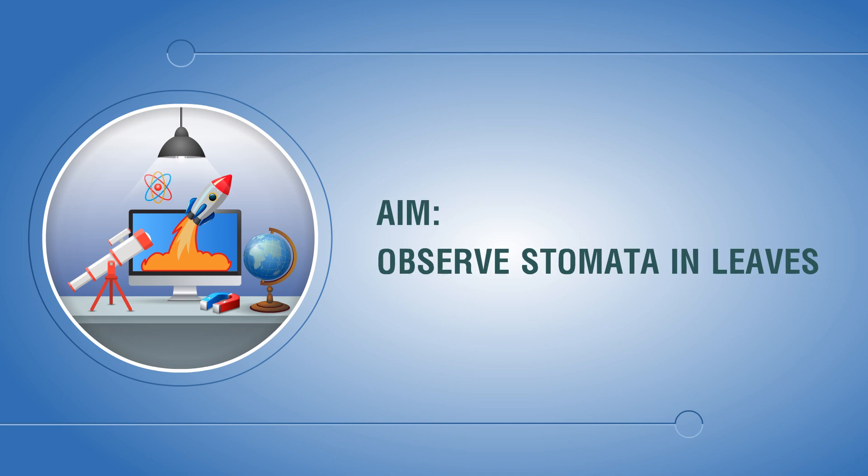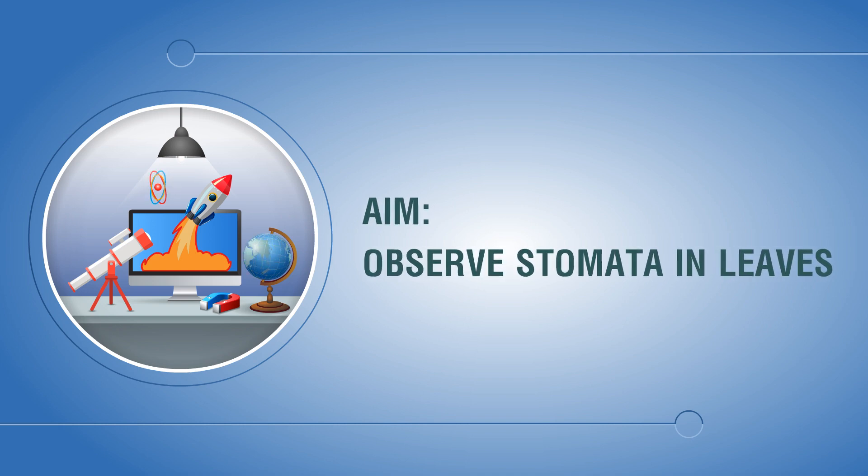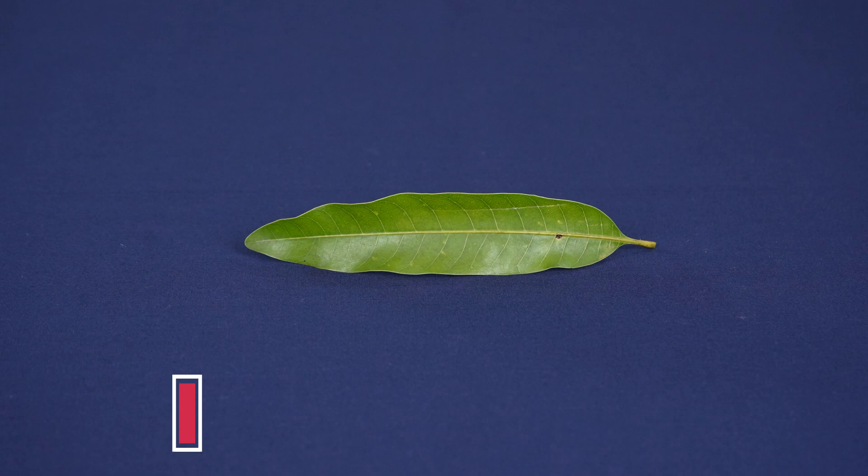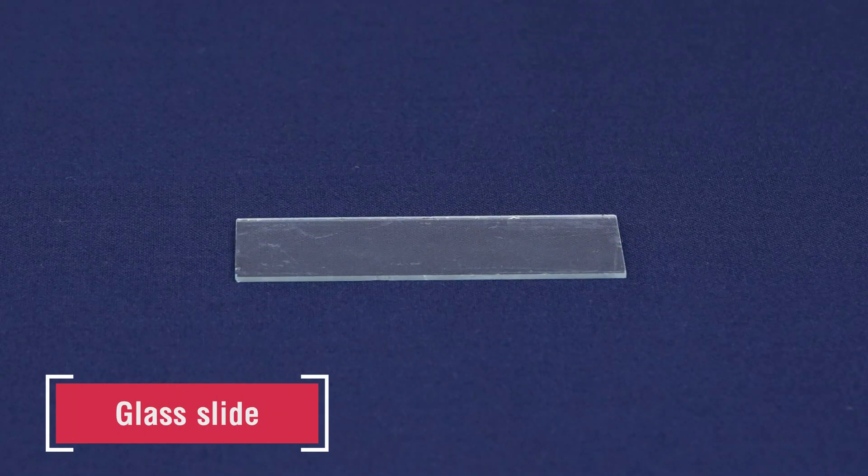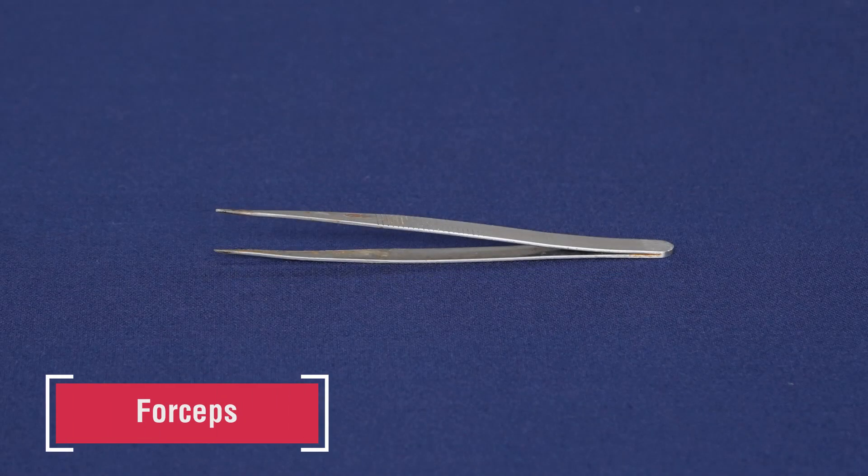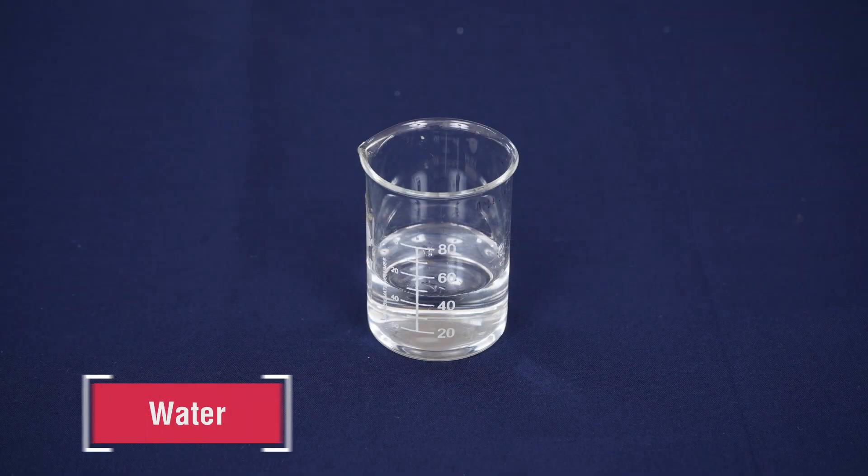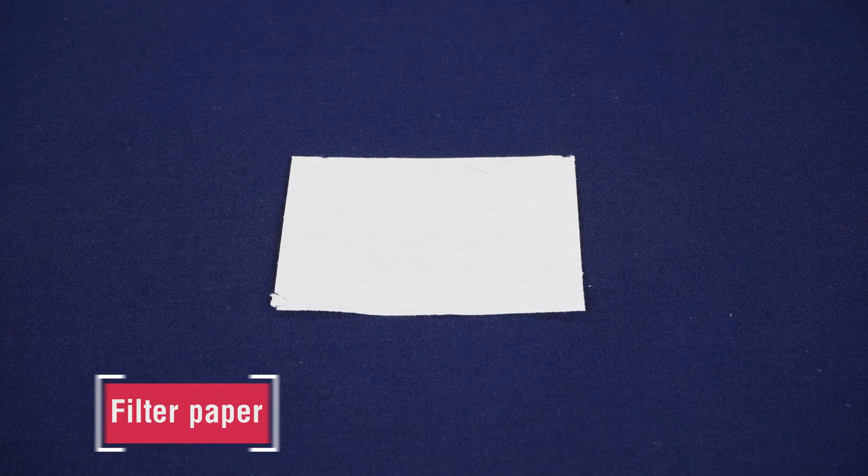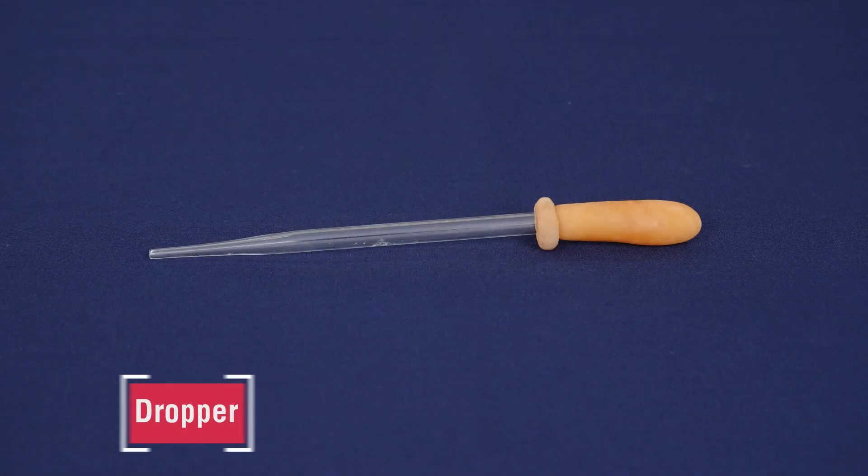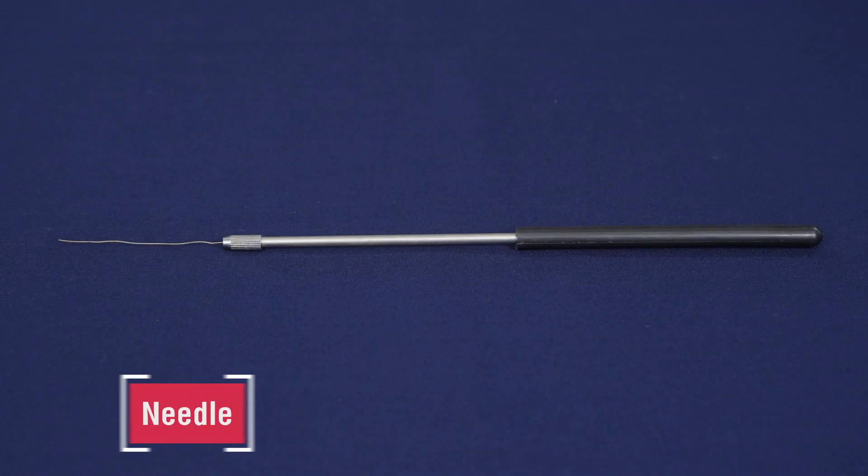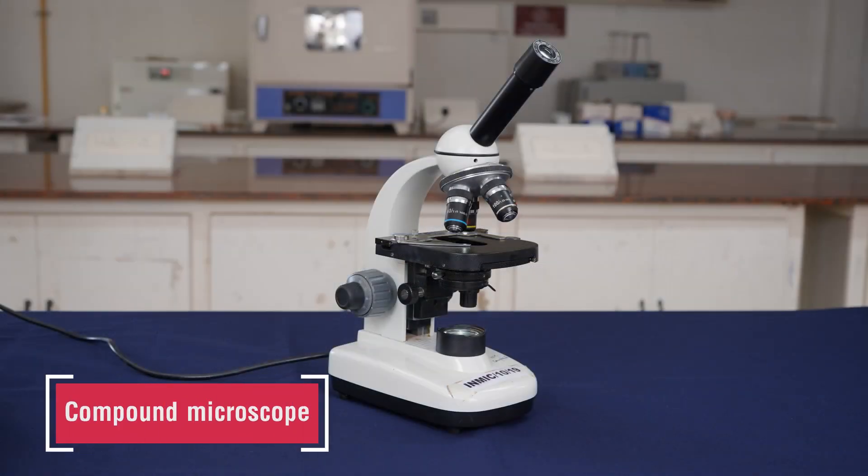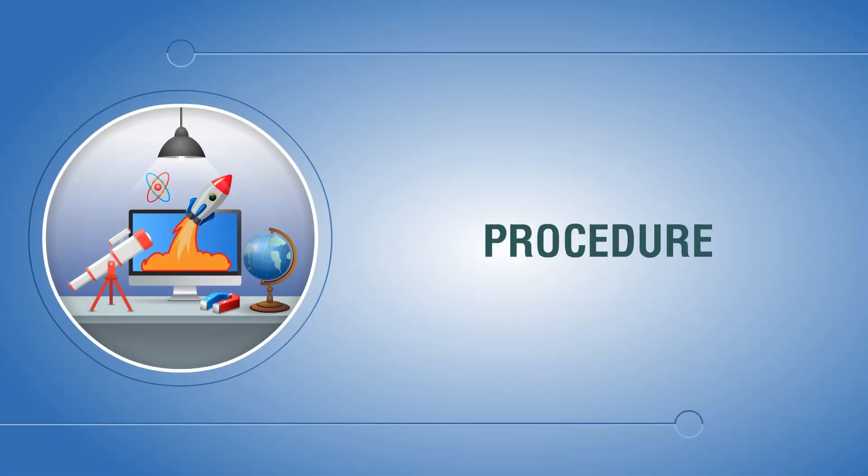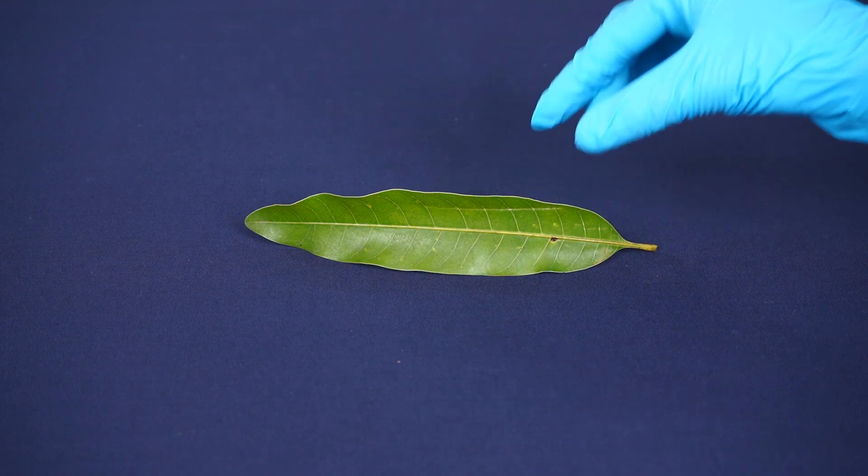Aim: observe stomata in leaves. Materials required: leaves of mango, glass slide, forceps, water, cover slip, filter paper, dropper, needle, compound microscope. Procedure: take one fresh leaf of a mango.